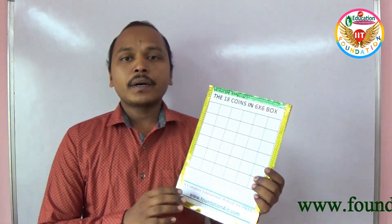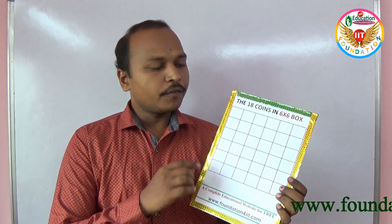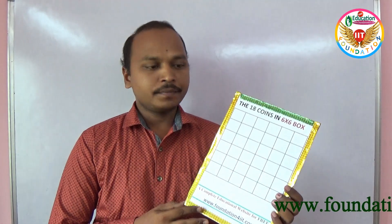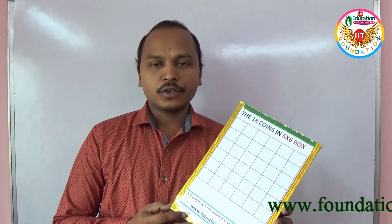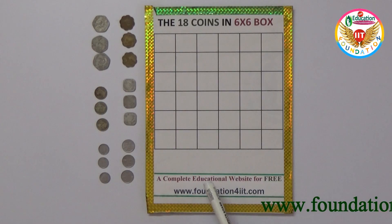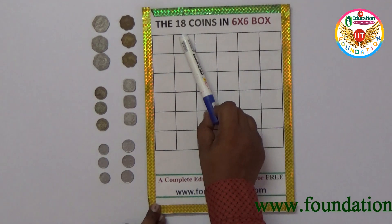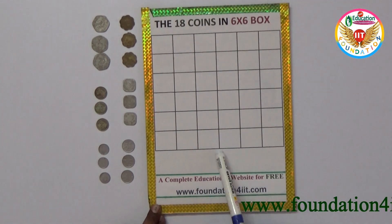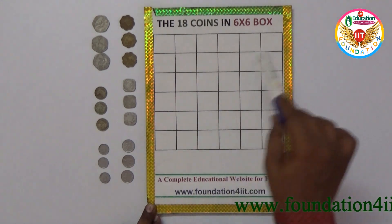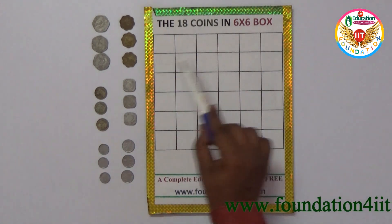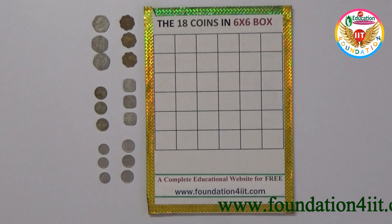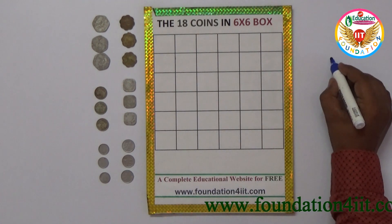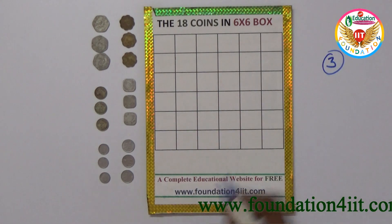The condition is every row and every column should have only 3 coins — not more than that. So in this project we need to arrange 18 coins in a 6x6 box. There are 6 columns and 6 rows total. When we arrange the coins, every row and every column must have exactly 3 coins — that's the rule.